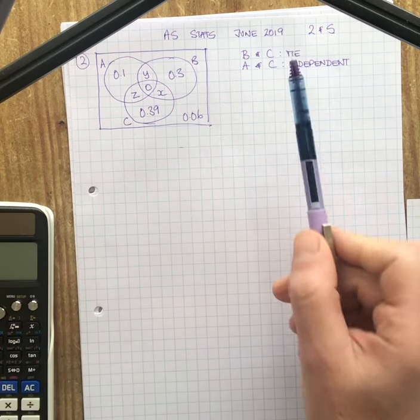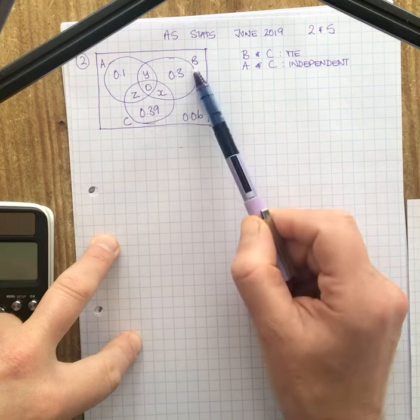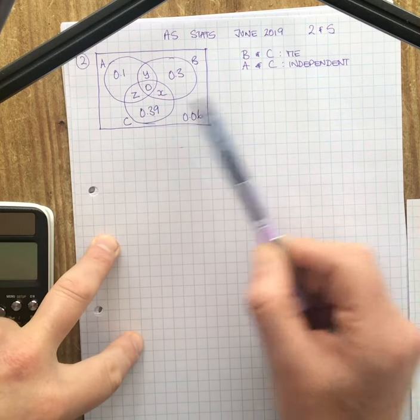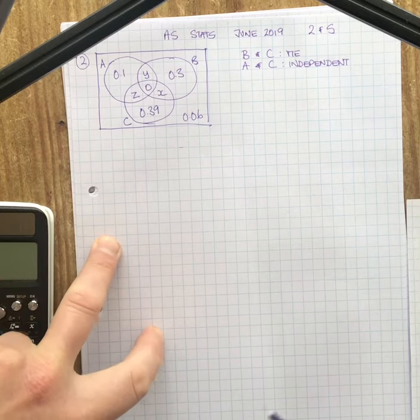They also tell you that B and C are mutually exclusive and they tell you that A and C are independent. Our job is to find X, Y and Z.